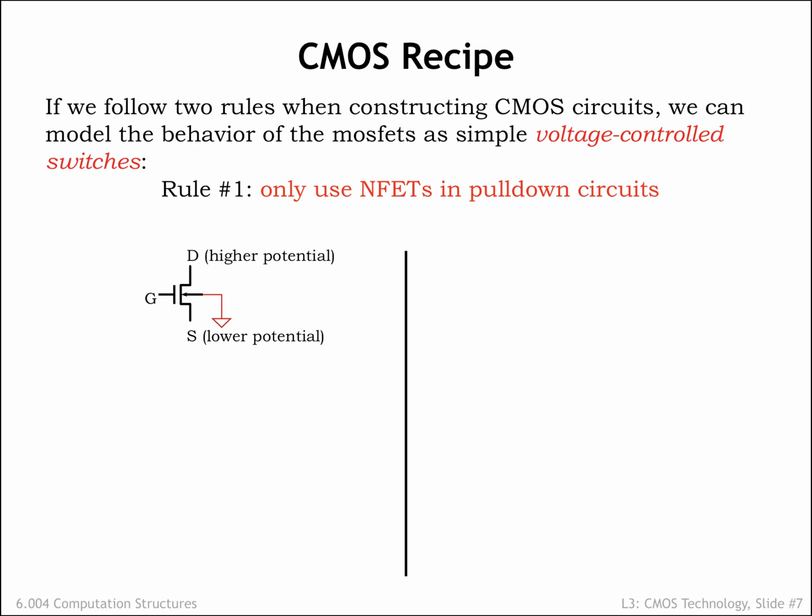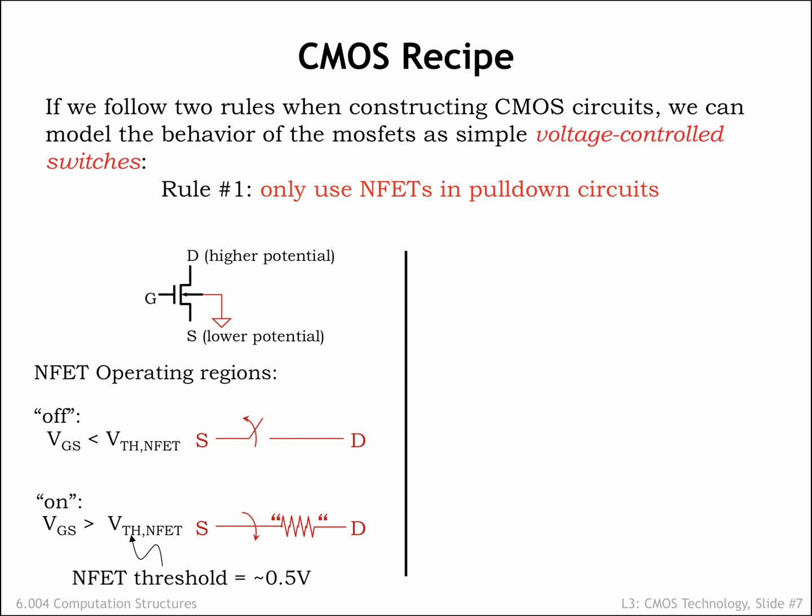The first rule is that we'll use only N-channel MOSFETs, which we'll call NFETs for short, when building pull-down circuits that connect a signaling node to the ground rail of the power supply. When the pull-down circuit is conducting, the signaling node will be at 0 volts and qualify as the digital value 0. If we obey this rule, NFETs will act as switches controlled by VGS, the difference between the voltage of the gate terminal and the voltage of the source terminal. When VGS is lower than the MOSFET's threshold voltage, the switch is open or not conducting, and there is no connection between the MOSFET's source and drain terminals. If VGS is greater than the threshold voltage, the switch is on or conducting, and there is a connection between the source and drain terminals.